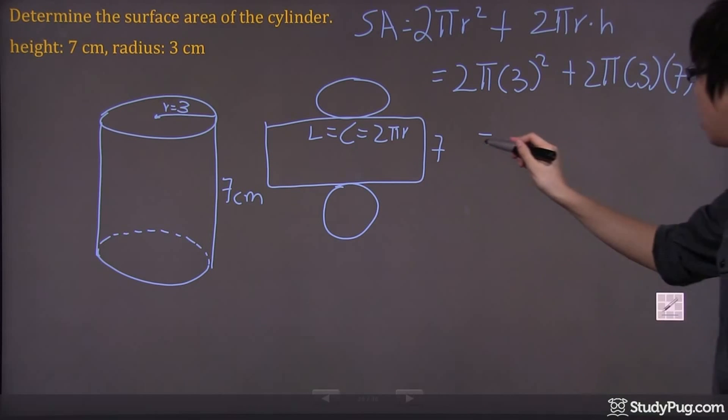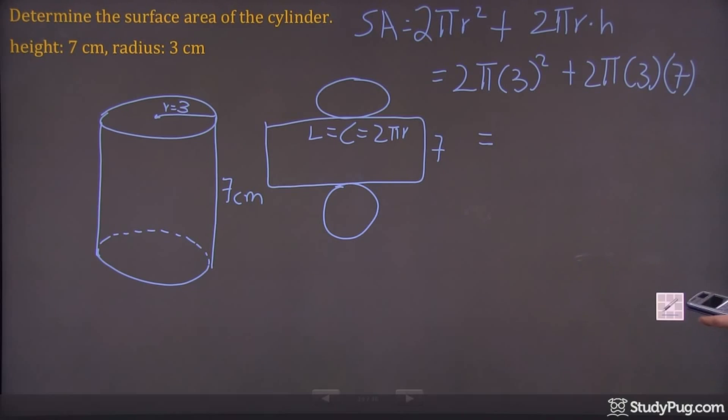All you have to do is grab your calculator and punch everything inside. We're going to get some decimals, but it's fine. 2 times pi times 3 squared, plus 2 times pi times 3 times 7 is 21.